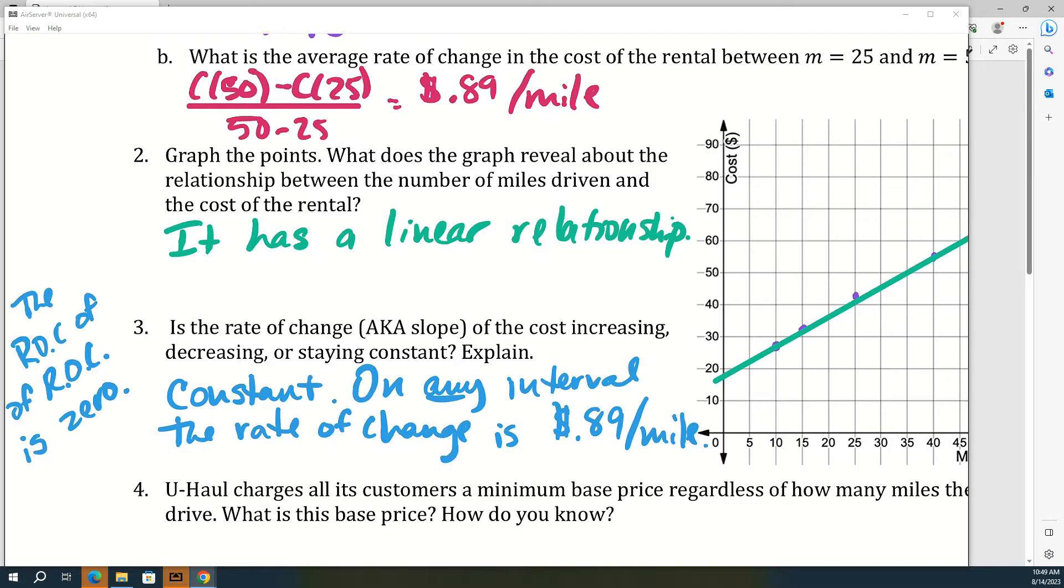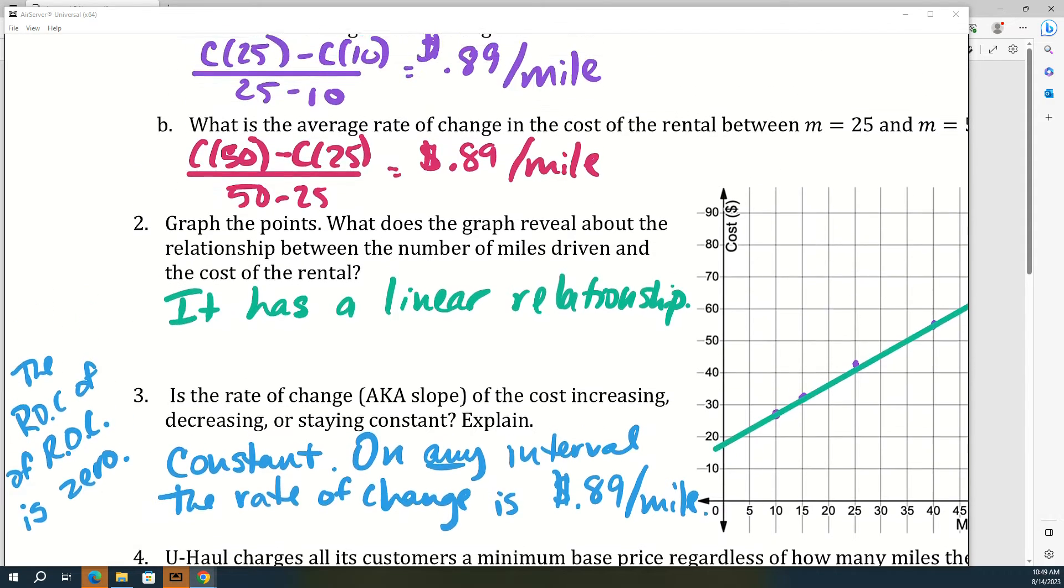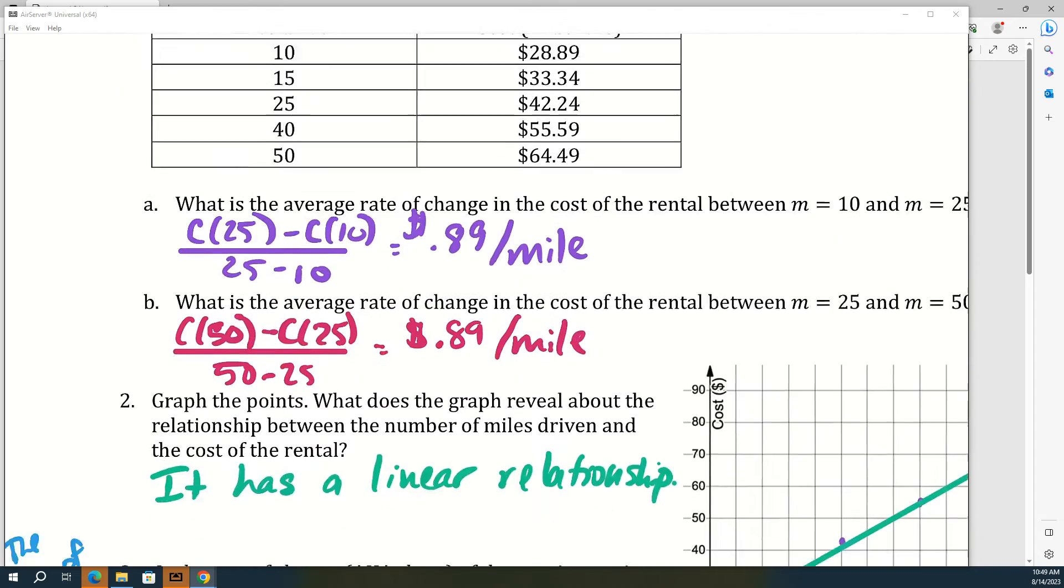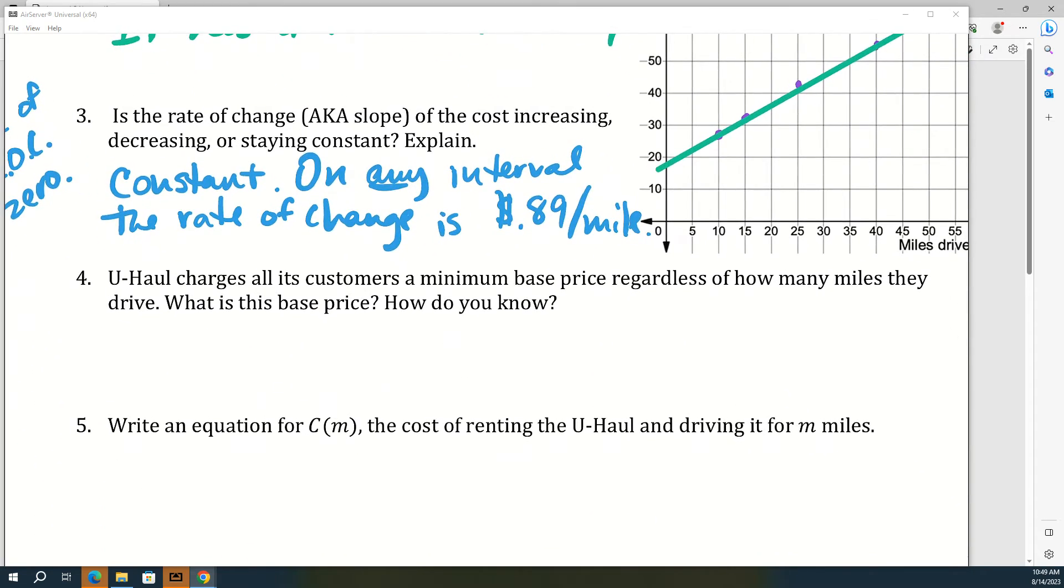Alright, and then you had to do a little figuring out to do four and then use that to do five. We know how much it costs to drive 10 miles, but we want to know how much they charge if you don't drive at all. So if you just rent a U-Haul and leave it in the parking lot, there is a minimum base price. You can take that $28.89 for driving 10 miles, and what would you need to subtract from it? 10 times the slope, very good. 10 slopes. And that's going to be $19.99. So $19.99 just to rent it and not drive it anywhere.